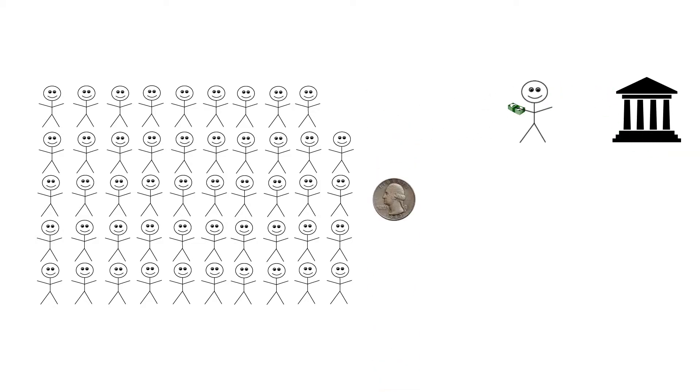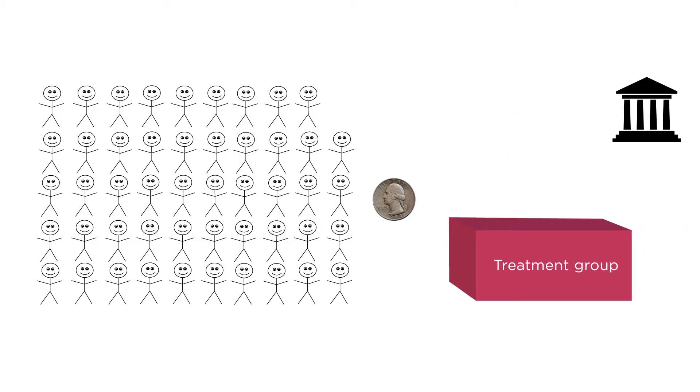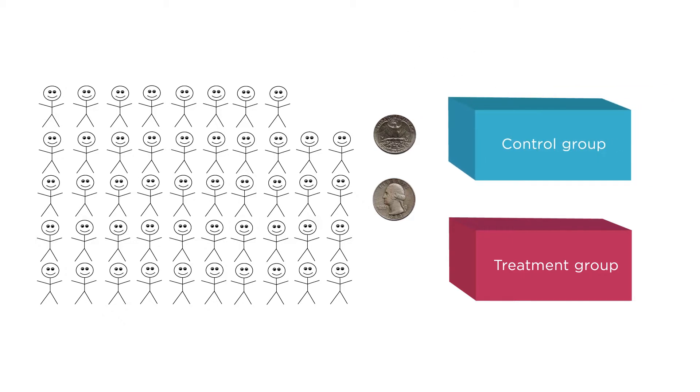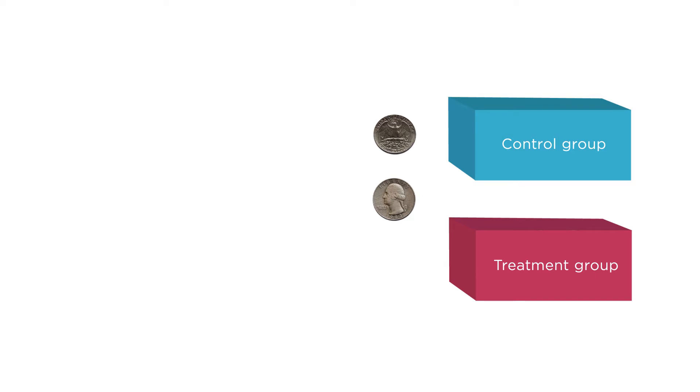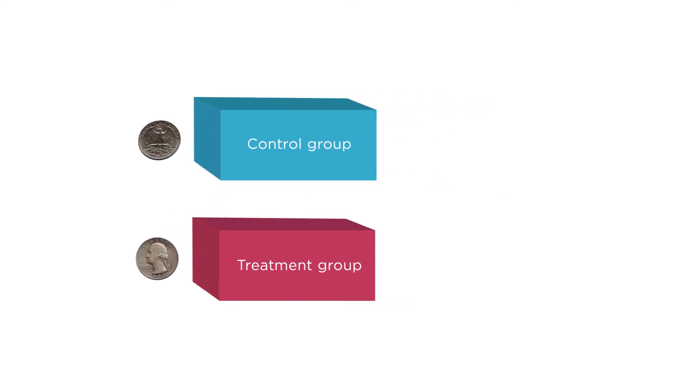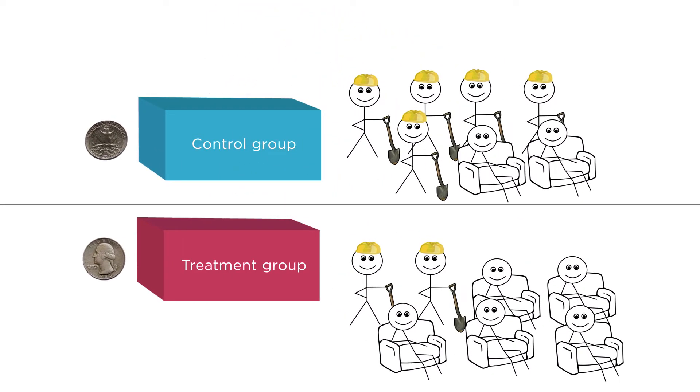In experimental terms, they are the treatment group. Tails, and that person gets nothing. In experimental terms, they are the control group. Thus, we can measure how much each group decides to work. Any differences between the groups can be attributed to the effect of the government benefit for the treatment group. Why? Because the coin flip took care of all the correlation and causation confusion we discussed earlier.